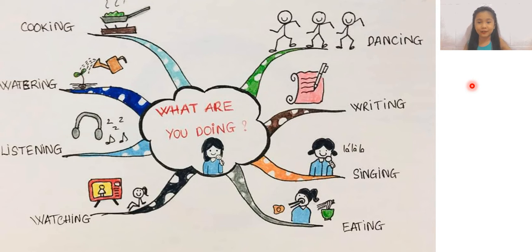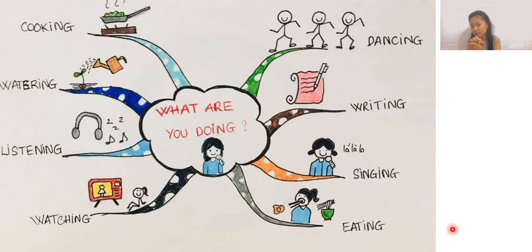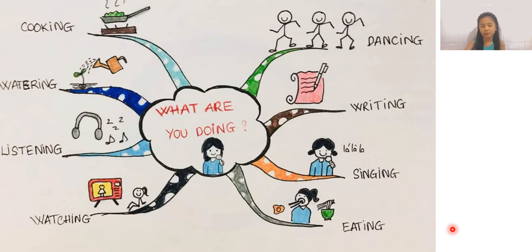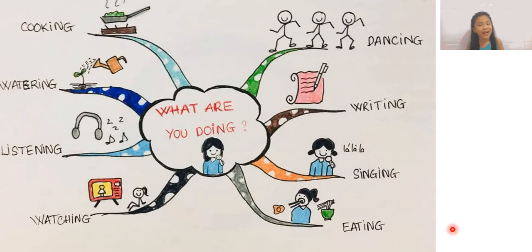Dancing is the action that you make when you are following the sounds of music. Next is writing. You are writing in a book, or writing a poem, or writing your homework. Writing is the action that you do with your pens, pencils, or any tools that you can use to write on a surface — usually paper. It can also be crayons.